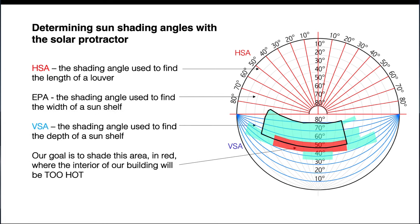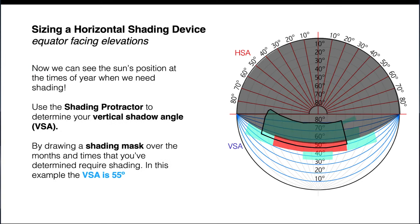Next we find the HSA, EPA, and VSA. These angles allow us to create an effective solar shading strategy for Nipumu. Starting with the VSA: it's the value used to find the shadow altitude angle for an overhang — understood in section. The VSA angles are shown in blue on the protractor, and we choose a line that shades the predominant portion of our mask. I've chosen a VSA of 55 degrees, which cuts off a portion of the red overheated area. Ideally we could shade more red, but additional shading devices will help cover the remaining times.